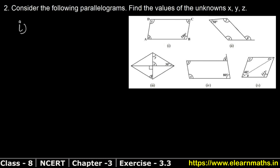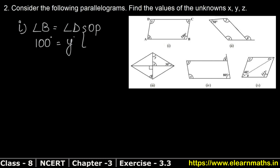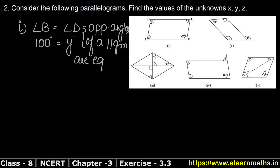Before doing this question, you should definitely look at question number one, where I explained some properties of a parallelogram. One key property is that opposite angles of a parallelogram are equal. So angle B is given as 100 degrees, which means angle D will also be 100 degrees. So we can say angle B equals angle D, meaning y equals 100 degrees, because opposite angles of a parallelogram are equal.